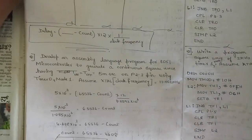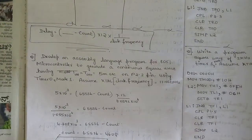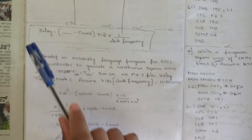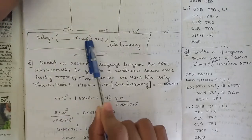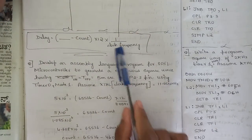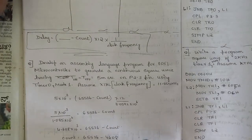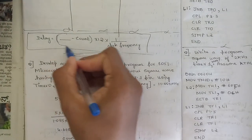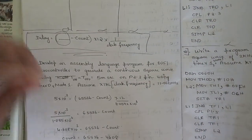The heading of module 3 covers some important delay programs that will appear in the examination. The simple formula for delays is: count into 2 to the power L, divided by clock frequency — that is XTAL, whatever clock frequency they mention in the question. The dash here has one fixed value that depends on which mode is used.